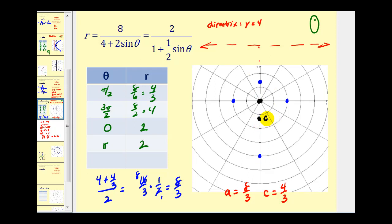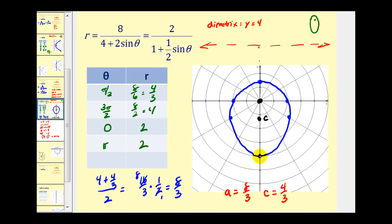Since we're traveling to the right 2.3 units, let's go out here about 2.3 units, and then the same thing on the other side — about 2.3 units. Now we can form a nice ellipse. If we wanted to find the other focus, remember the distance was four-thirds units, so we could go up four-thirds units from this vertex to find the second focus here.